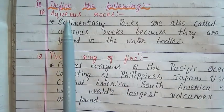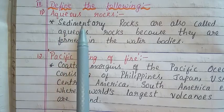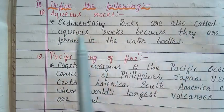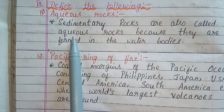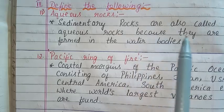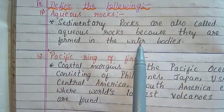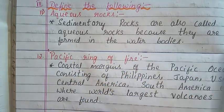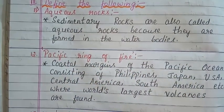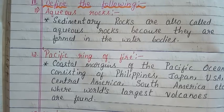Next section: Define the Following. Question 11: Aqueous rocks. Answer: Sedimentary rocks are also called Aqueous rocks because they are formed in water bodies. Question 12: Pacific Ring of Fire.